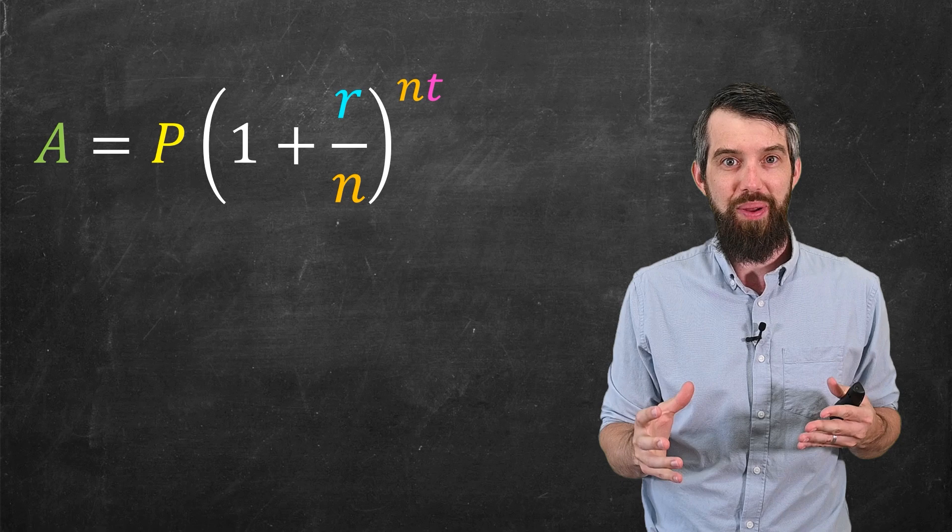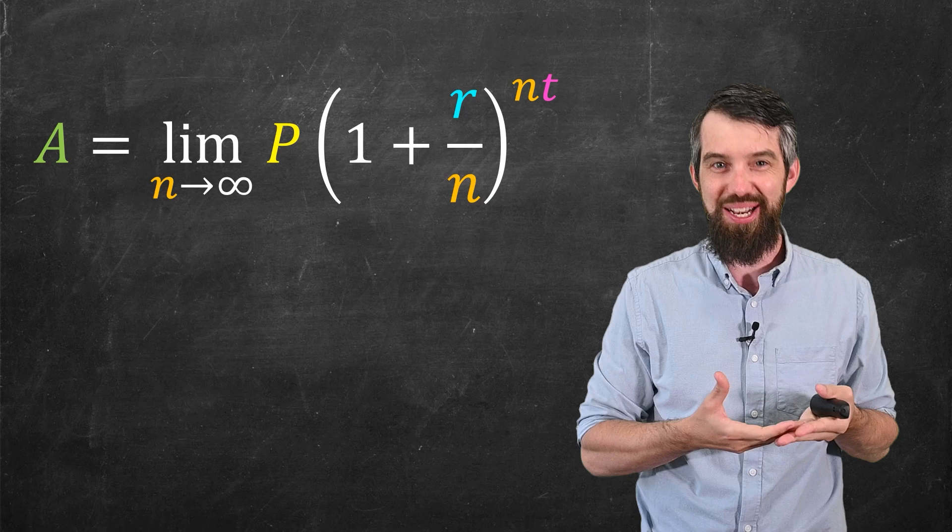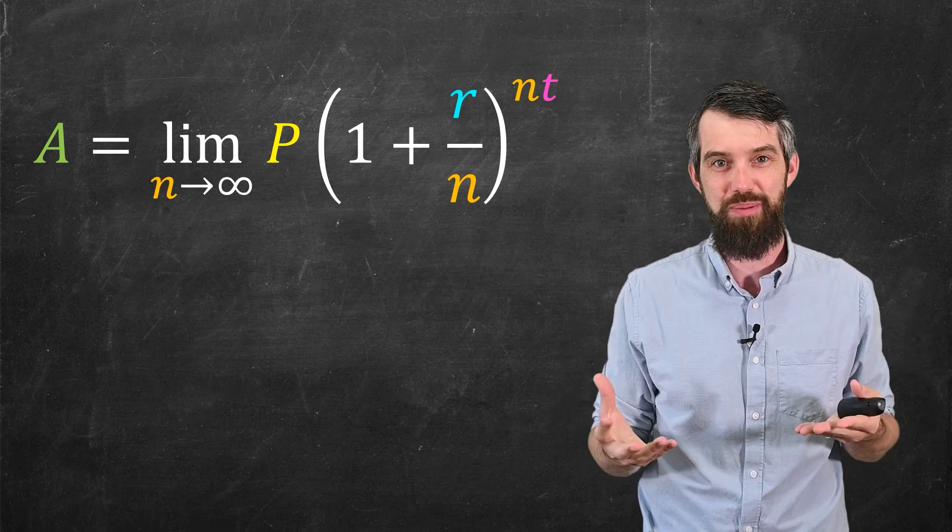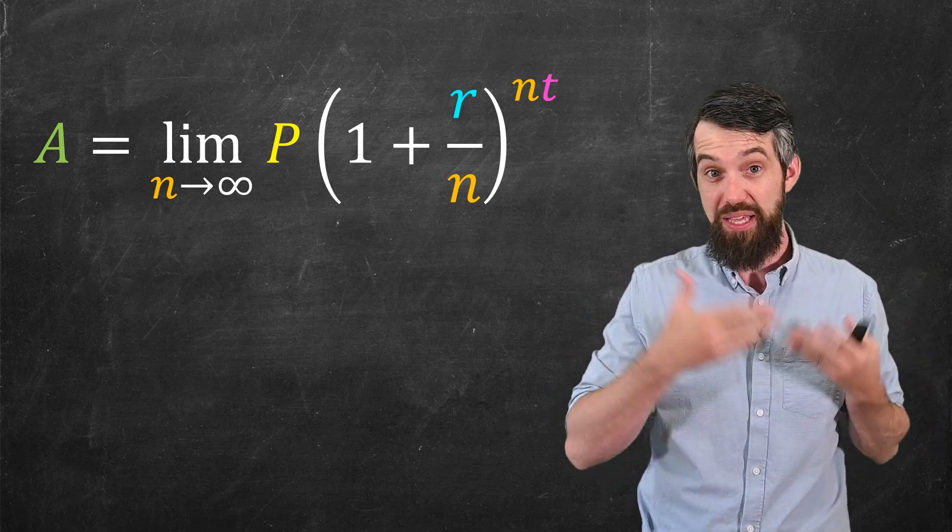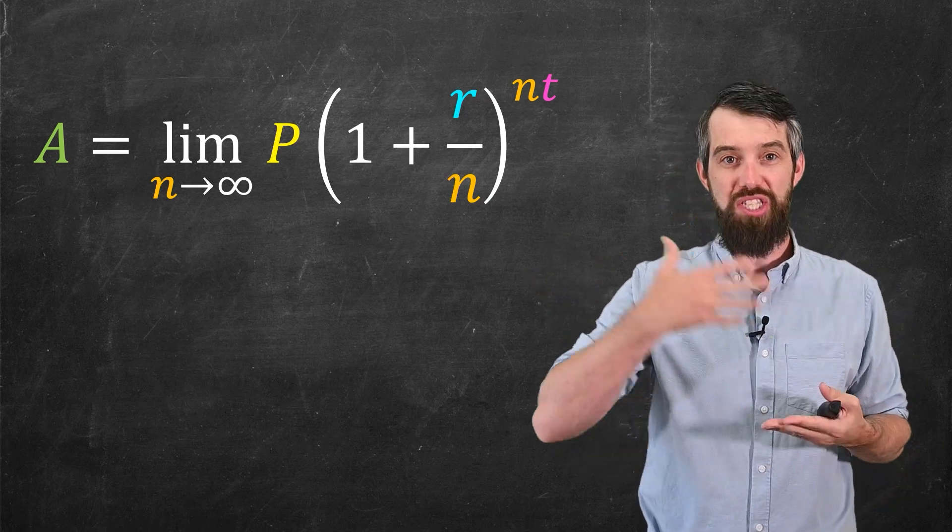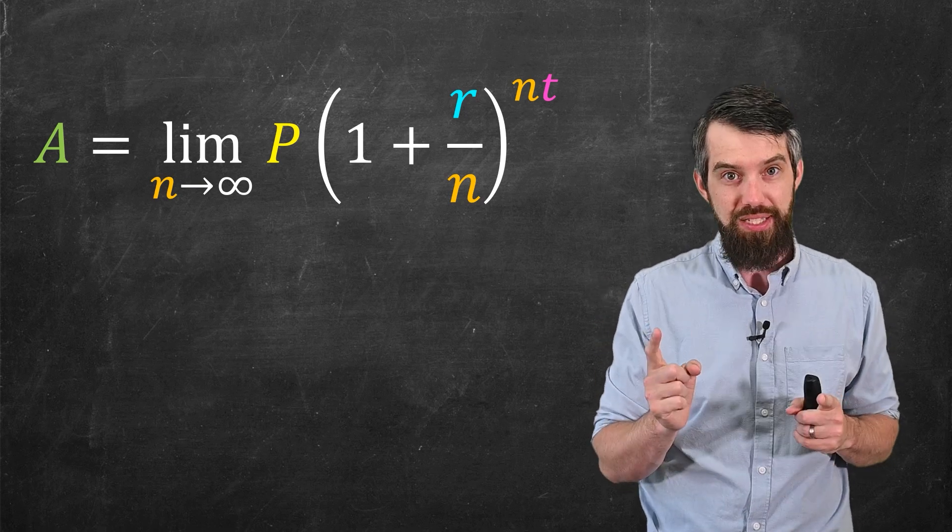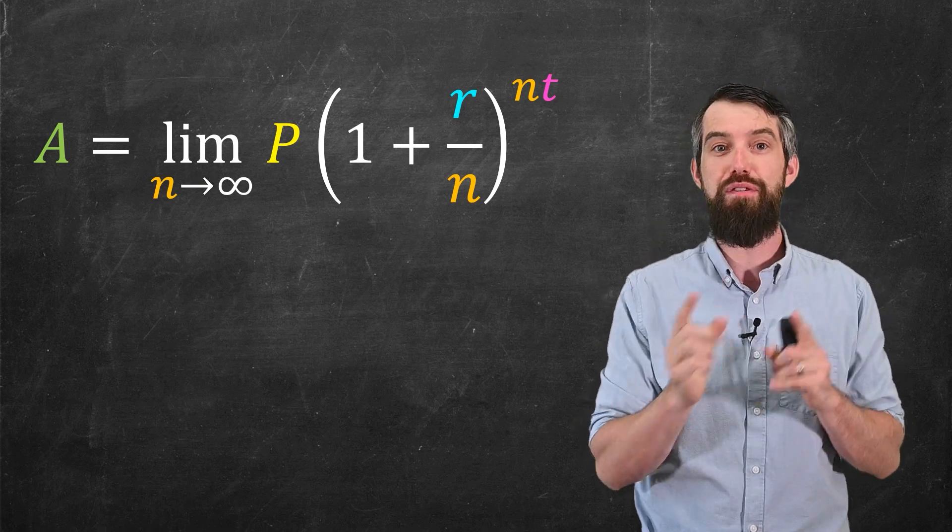So let's do the following. Let's take n and send it to infinity. We write down the limit as n goes to infinity. This is sort of calculus-speak for saying, I'm just going to let my n be as large as possible. So what happens here? What does this converge to if it indeed converges to some number? Well it does.